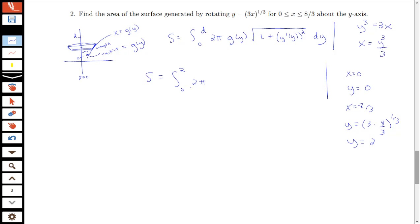So I'm going to have this 0 to 2, 2π times y³ over 3 times the square root of 1 plus my derivative here, dx/dy squared. So I'll have (3y² over 3)² dy. If I want to use this version here of finding my surface area about the y-axis and integrating with respect to y.